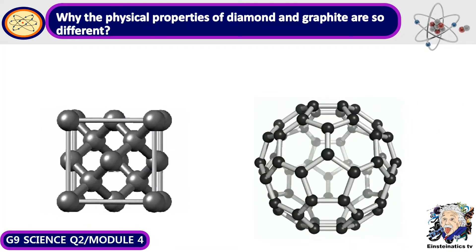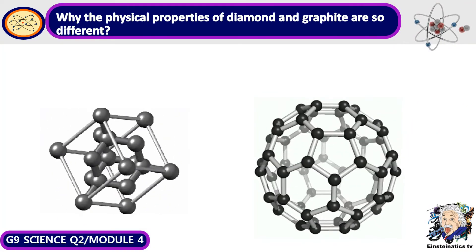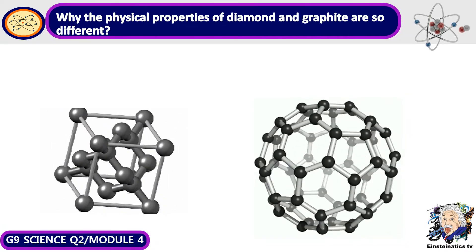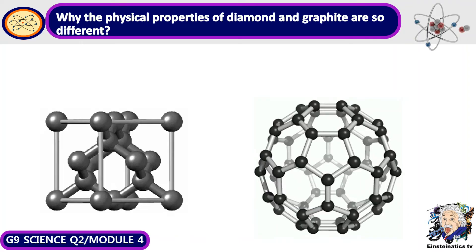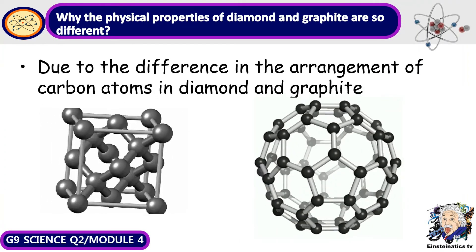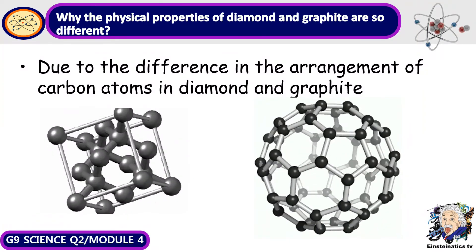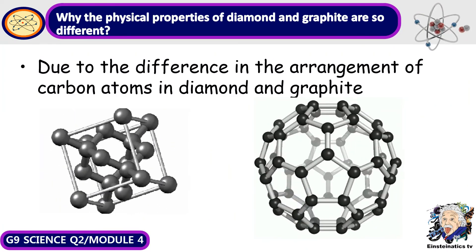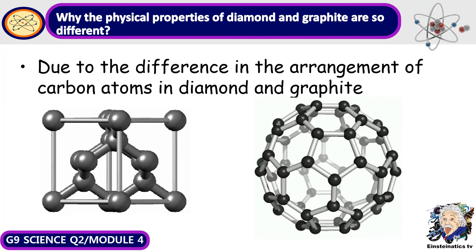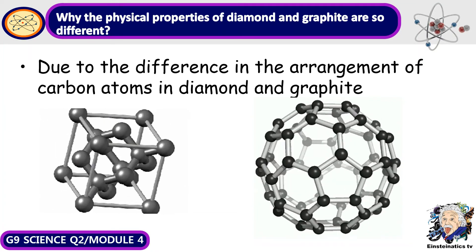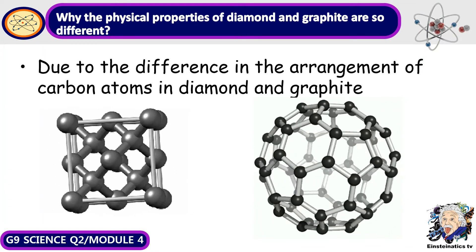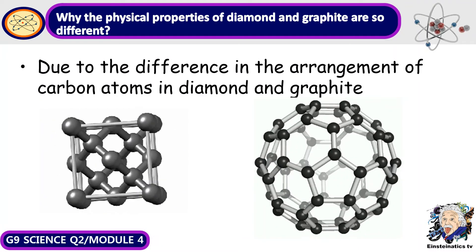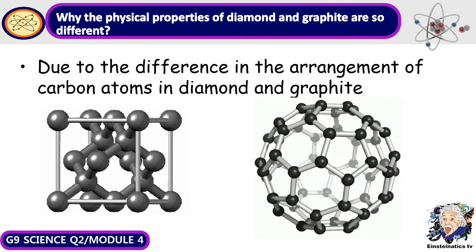If the chemical makeup of diamond and graphite is identical, why are their physical properties so different? The reason is the difference in the arrangement of carbon atoms in diamond and graphite. Although they are chemically identical, their physical properties are very much different because of how their carbon atoms are arranged.